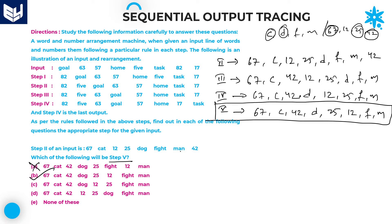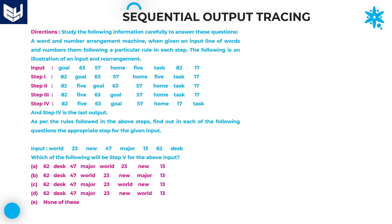Step 2 is given and we need to find step 5. Step 5 is option B. Let's move on to the next question. The input is given. The question is which of the following will be step 5. The letters are W, N, M, D and the numbers are 23, 47, 13, 62.